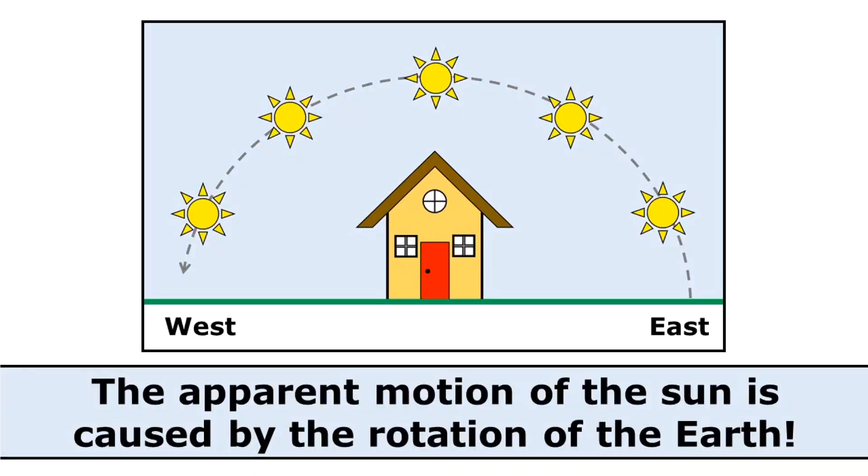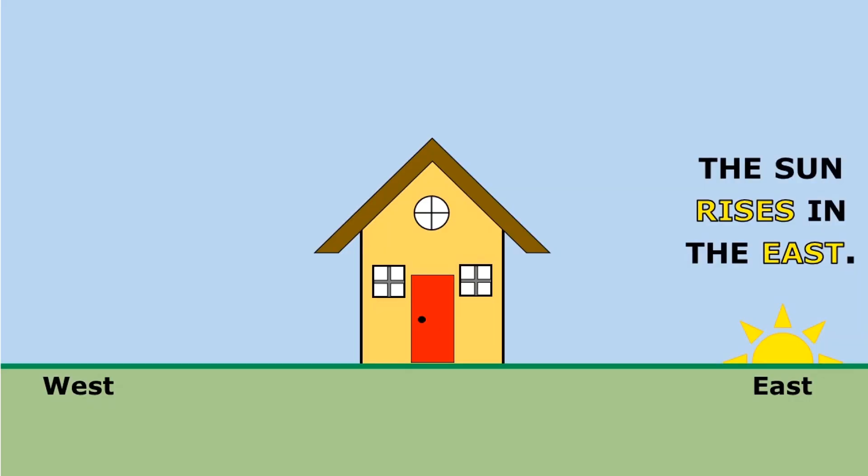The Sun also looks like it's moving across the sky each day. But the apparent motion of the Sun is caused by the rotation of the Earth. The Sun rises in the east.